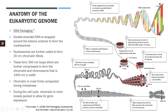Beyond this, the chromatin fibre is more firmly compacted to form chromosomes. This highly compacted chromosome has a width of 1,400 nm, allowing the chromatin to package itself within the 10 micrometre nucleus. These chromosomes are visible in this form during metaphase of the cell cycle, during cell division. During interphase of the cell cycle, however, chromatin fibres are more loosely packed in order to allow for gene expression.